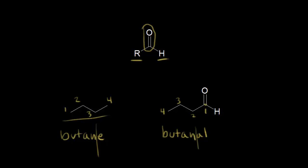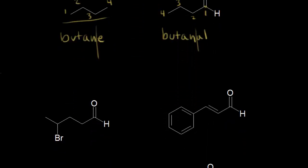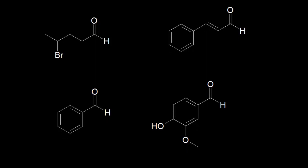Let's look at some more examples. We're going to number to give our carbonyl carbon the lowest number possible. The aldehyde is going to take priority over things like double bonds, alkyl groups, and halogens. Looking at this one on the top left, we number one, two, three, four, and five. We have a five-carbon aldehyde — a five-carbon alkane would be pentane — so a five-carbon aldehyde would be pentanal. We also have a substituent at carbon four: a bromine. So four-bromopentanal would be the IUPAC name.